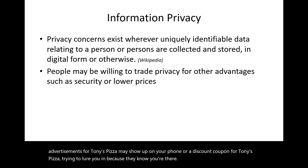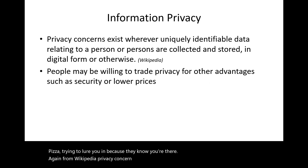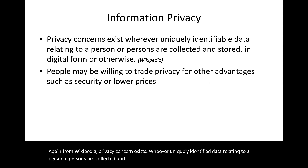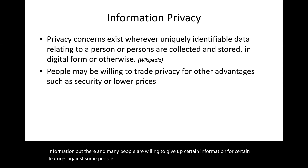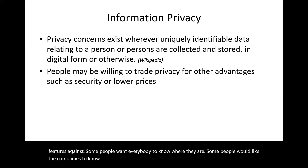From Wikipedia: 'Privacy concern exists wherever uniquely identifiable data related to a person or persons are collected and stored in digital form.' Many people are willing to give up certain information for convenience. Some want everyone to know where they are; some would like companies to send ads based on their location; others would just as soon they didn't.